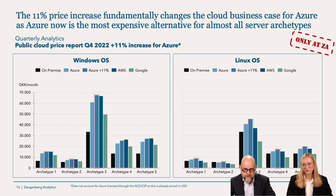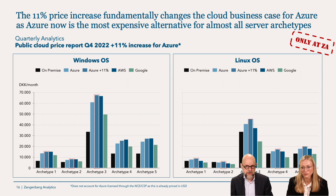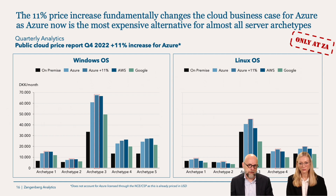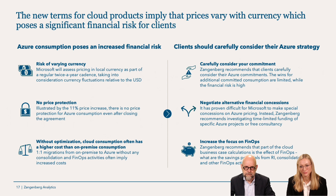This graph is important to demonstrate that an 11 percent Azure price increase makes Microsoft more expensive than all alternatives in archetypes one, two, and three, and almost as expensive as AWS in archetypes four and five. This is the argument that the 11 percent price increase is unacceptable — it makes Microsoft non-competitive.